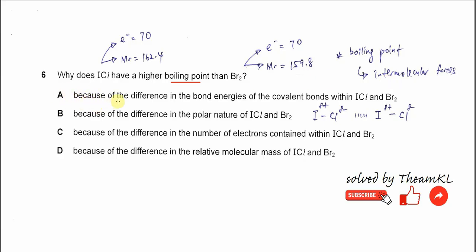For option A, the difference in the bond energy of the covalent bond within iodine chloride and bromine. This is not the main contributor for the boiling point. When this covalent bond breaks, it will decompose and form the elements or atoms.